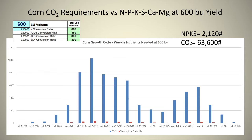When you look at the nutrient requirements of NPK versus carbon dioxide for 600-bushel corn, which is where the world records are approaching, the NPK component is a little over 2,000 pounds. The carbon dioxide component is over 63,000 pounds.